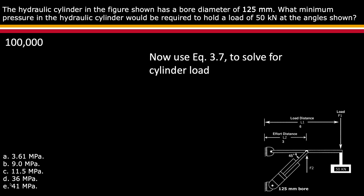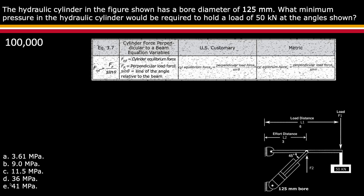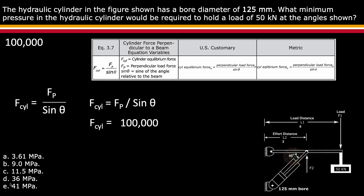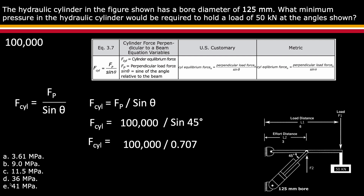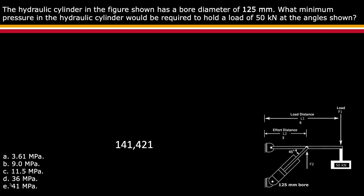Now that the equilibrium force is known, use equation 3.7 to solve for the cylinder load. The force of the cylinder is equal to the perpendicular force divided by the sine of angle theta. In this case the angle is 45 degrees. Using the equilibrium force of 100,000 newtons divided by the sine of 45 degrees, which equals 0.707 — you can calculate the sine of theta or use the charts in the math book — the force of the cylinder is 141,421 newtons.